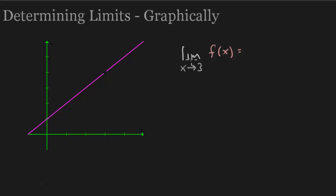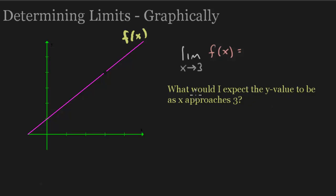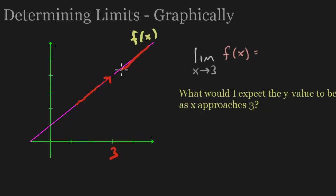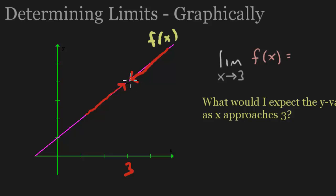Let's start with an easy one. We have the limit of f of x — I'm not telling you what f of x is, but it really doesn't matter because we have the graph of it. The limit of f of x as x approaches 3. What would I expect the y-value to be as x approaches 3? Approaching from the left and from the right, it looks like I'm approaching the exact same spot, and that y-value would be 4. So the limit of this function as x approaches 3 is 4.